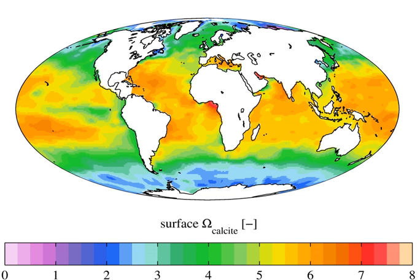The first GLODAP release was produced from data collected during the 1990s by research cruises on the World Ocean Circulation Experiment, Joint Global Ocean Flux Study, and Ocean Atmosphere Exchange Study programs. The second GLODAP release extended the first using data from cruises from 2000–2013. The data are available both as individual samples from sample sites, and as interpolated fields on a standard longitude, latitude, depth grid.